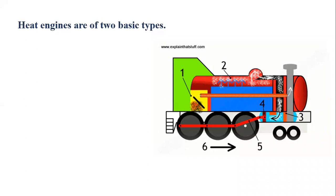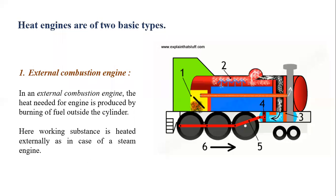Heat engines are of two basic types. The first is the external combustion engine. In an external combustion engine, the combustion of the working substance occurs externally — the heat needed is produced by burning fuel outside the cylinder. The working substance is heated externally, as in the case of a steam engine.